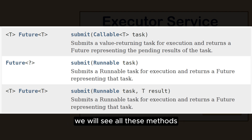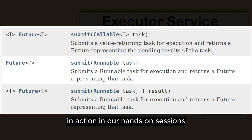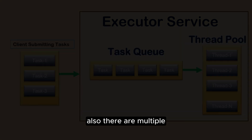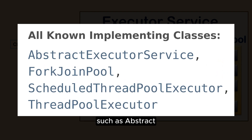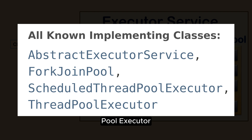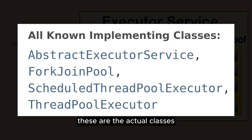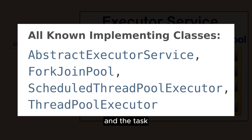We will see all these methods and some other functionalities in action in our hands-on sessions. There are multiple implementations available for this interface, such as AbstractExecutorService, ForkJoinPool, ScheduledThreadPoolExecutor, and ThreadPoolExecutor. These are the actual classes which define how thread pools will be managed and task execution will be done.